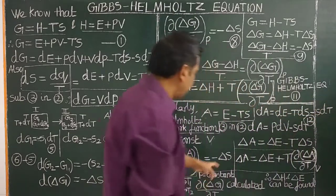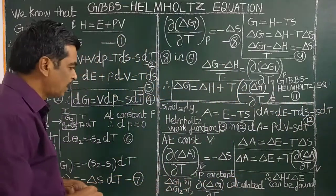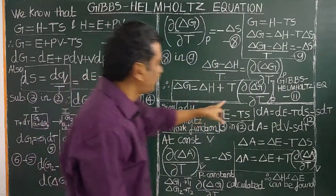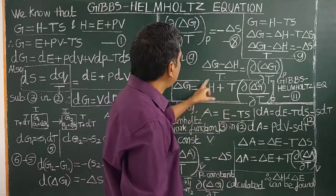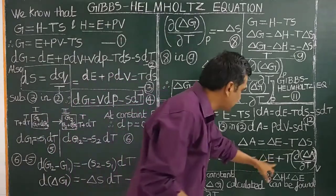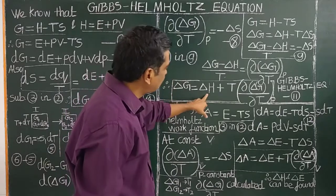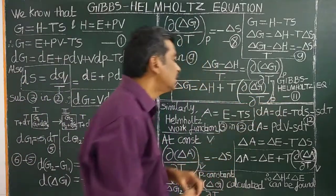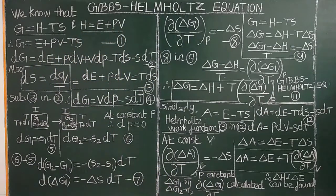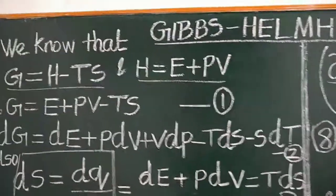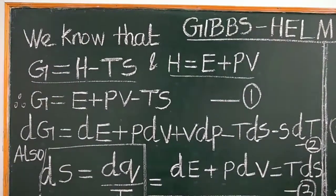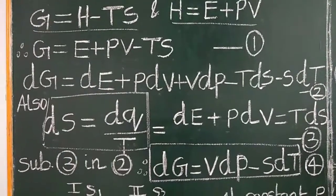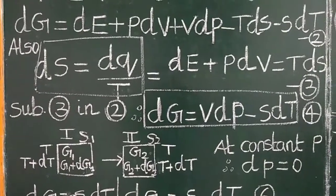This expression is again called the Gibbs-Helmholtz equation. For example, if you know the variation of free energy of a chemical reaction at two different temperatures, then delta H can be calculated and delta E can be calculated. Therefore, if you know delta G and delta H, you can also calculate the variation of free energy of a reaction with respect to temperature. Thank you for watching.